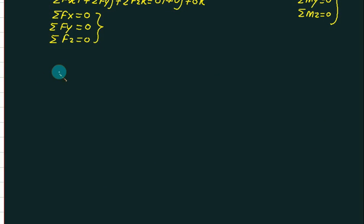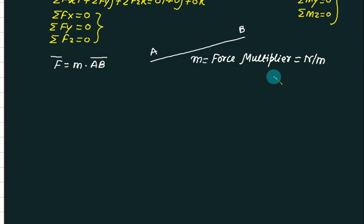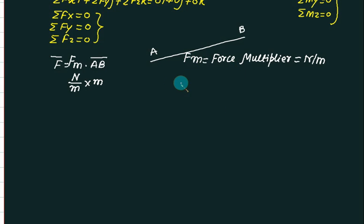Any unknown force is always given in the form F bar equals m multiplied by the unit vector along AB. Here m is the force multiplier, and its unit is newton per meter. The unit vector AB has units of meters, so meters cancel and the force is in newtons. To simplify, I will write m only instead of writing the full force expression. If I have one force I will write m1, for another force I will write m2.